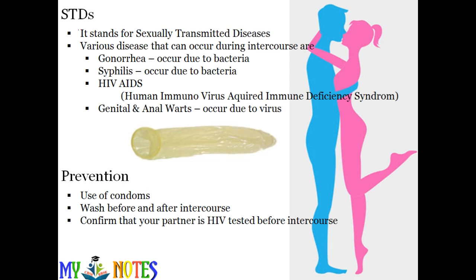Next are STDs — Sexually Transmitted Diseases. These are various diseases that can occur during intercourse or physical contact. One is gonorrhea, which is a bacterial infection, and another is syphilis, which is also a bacterial infection.